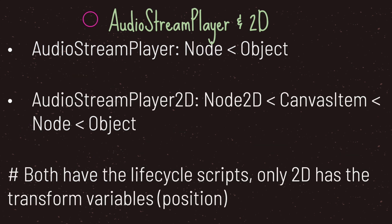One thing to keep in mind is that the AudioStreamPlayer class inherits from the Node class, and the AudioStreamPlayer2D class inherits from Node2D. This means that your AudioStreamPlayer2D node has transform properties, including position. Both the AudioStreamPlayer class and the AudioStreamPlayer2D class have the lifecycle scripts available to them.